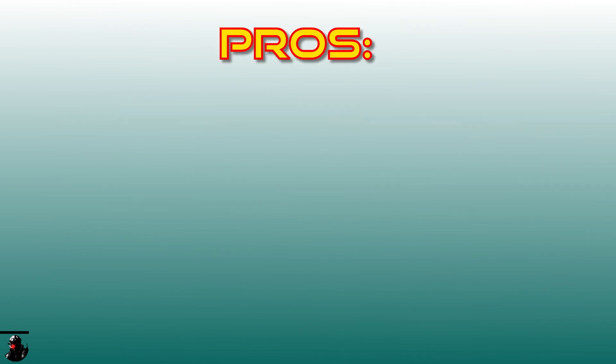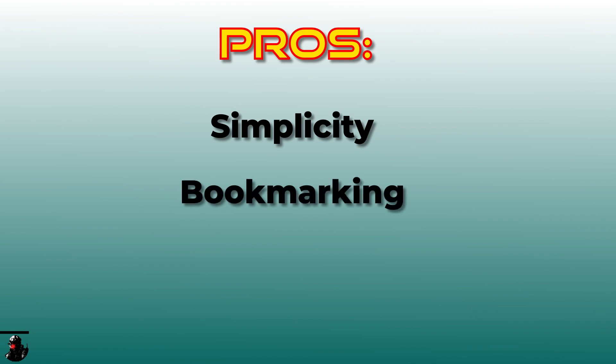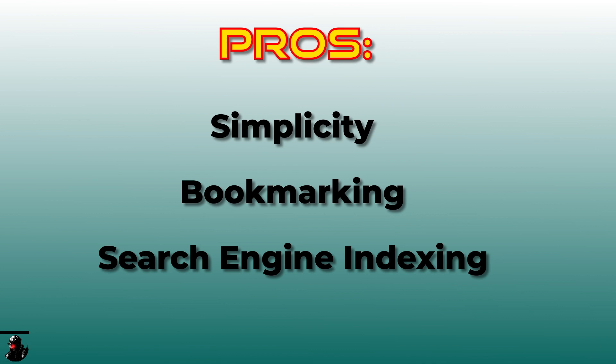Let's delve into the pros and cons of using the GET method. The GET method is straightforward to use and understand. For example, when you share a link with someone, you're essentially using the GET method — this simplicity makes GET requests ideal for beginner web developers to grasp. You can also bookmark URLs with GET parameters, which is particularly useful for saving searches or specific states of webpages. Additionally, GET URLs are easily indexed by search engines, meaning content fetched via GET can be found and listed by search engines, improving your site's visibility and SEO.